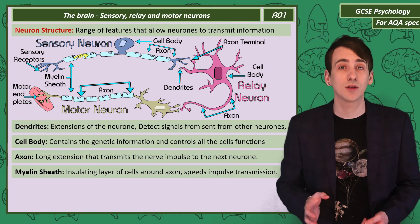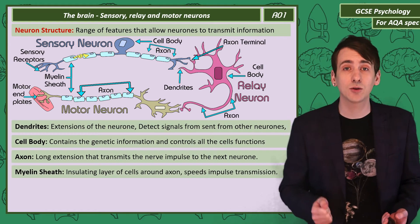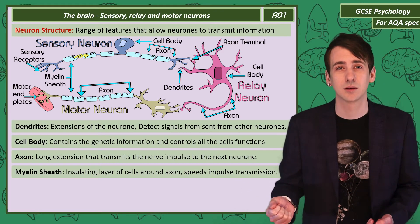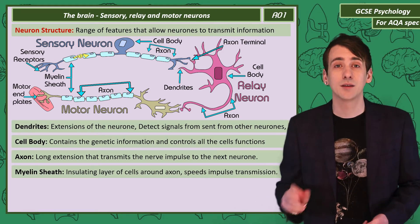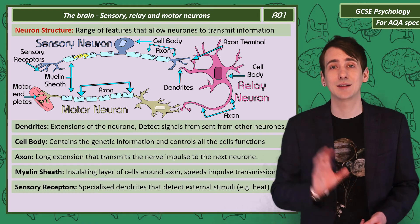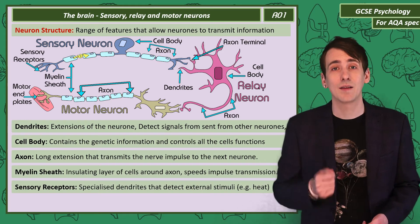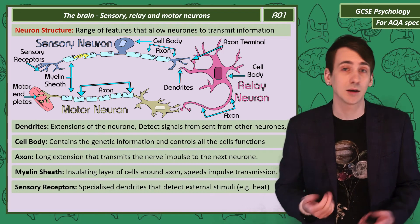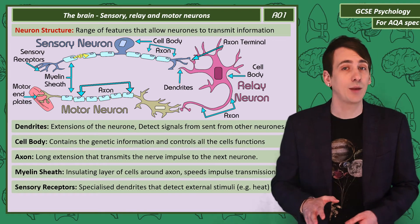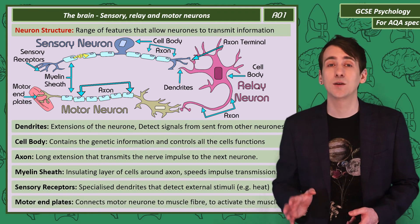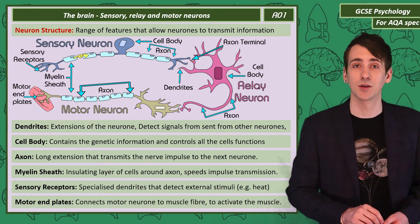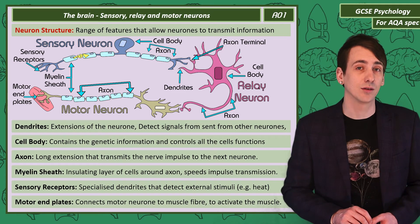The myelin sheath works as insulation, making the electrical signal or nerve impulse travel faster. Sensory receptors on a sensory neuron are specialised dendrites that detect external stimuli, like heat, taste, or light. Motor end plates are at the end of motor neurons, attaching them to the muscle fibres, used to activate muscles.